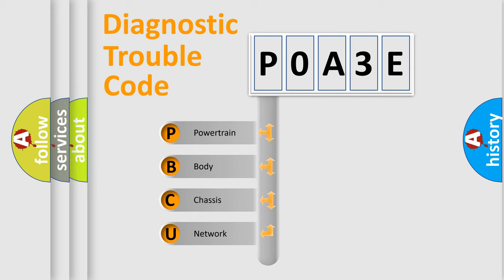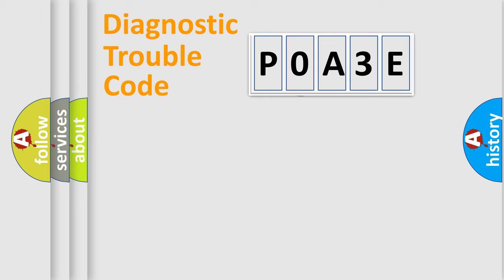We divide the electric system of automobile into four basic units: Powertrain, Body, Chassis, Network. This distribution is defined in the first character code.